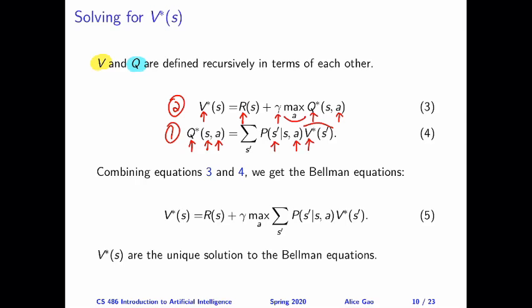So intuitively, these two equations tell us how the V values and Q values are related to each other. Our goal is to derive an algorithm to solve for the V values, so let's take these two equations, combine them and eliminate the Q values, leaving only the V values. By doing this, we get equation 5, which are called the Bellman equations.